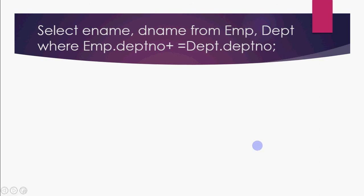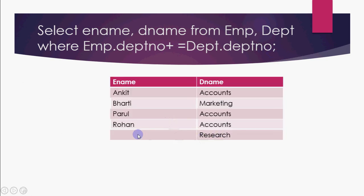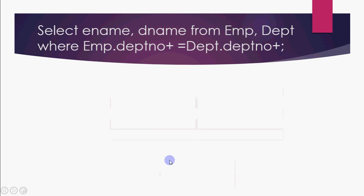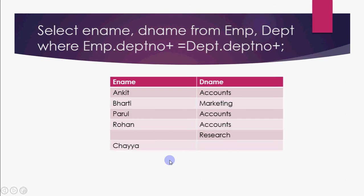Similarly, if you want to show non-matching departments, you put the plus sign on the employee side instead. This shows the research department with a null employee column, because there is no employee in the research department. That is your right outer join. If you place plus signs on both sides, it becomes a complete outer join, showing all records including nulls from both sides.